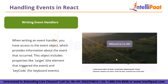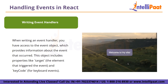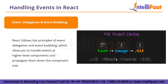React follows the principle of event delegation and event bubbling, which allows you to handle events at higher level components and propagate them down the component tree. This enables more efficient event management and reduces the need for attaching event listeners to every individual element. By attaching event listeners to parent components, you can capture events from child components and handle them centrally.